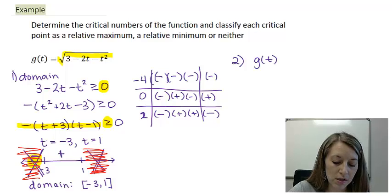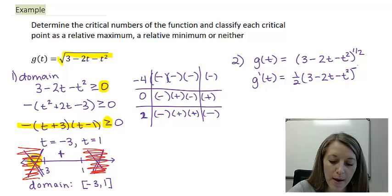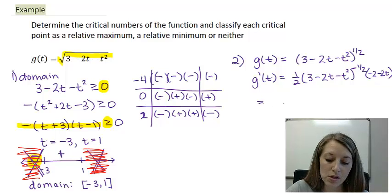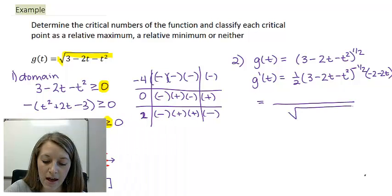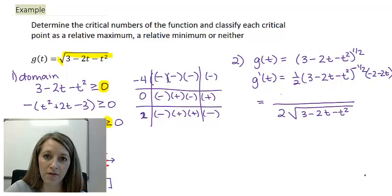We rewrite the function using the ½ power, then apply the chain rule. The derivative is (1/2) times the inside raised to the (−1/2) power, multiplied by the derivative of the inside, which is −2 − 2t. Rewriting: the (−1/2) exponent moves the square root to the denominator, giving us (−2 − 2t) divided by (2√(3 − 2t − t²)).